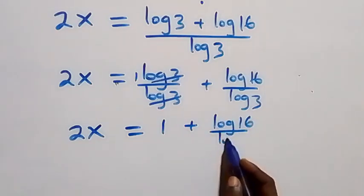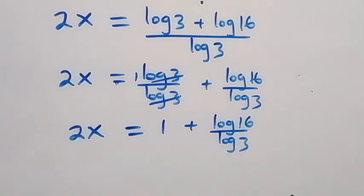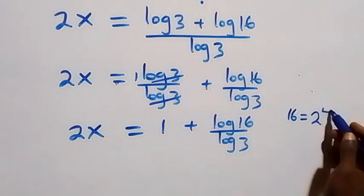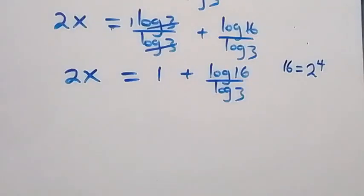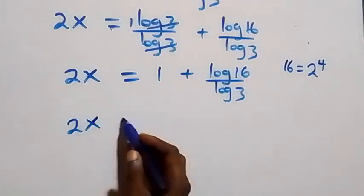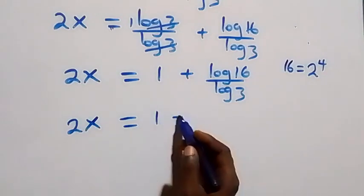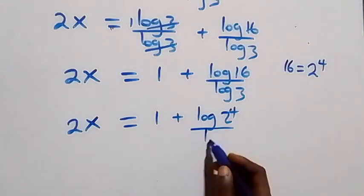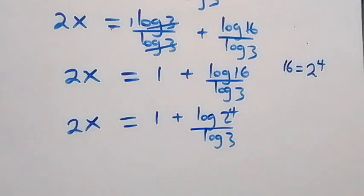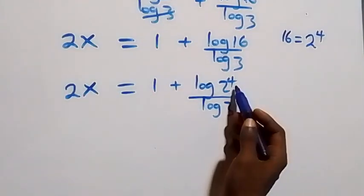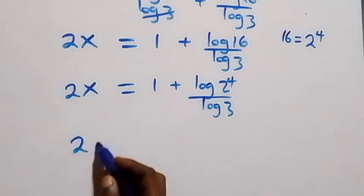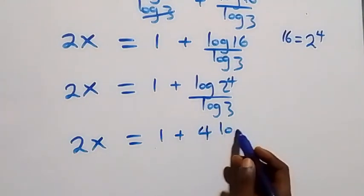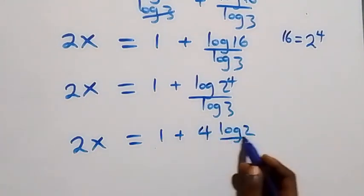We can express sixteen as two times two times two times two, which is two raised to power four. Then what we have becomes two x equals to one plus log of two raised to power four, over log three. Applying the power rule of log, the four comes down and this becomes two x equals to one plus four times log two over log three.